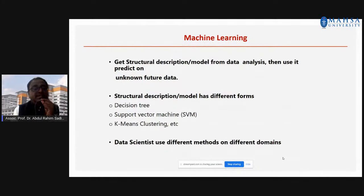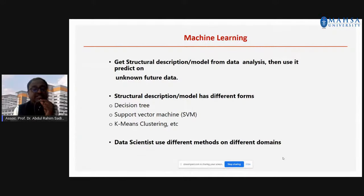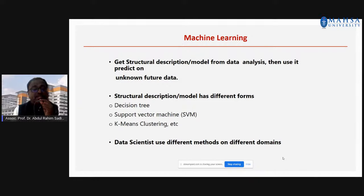The main algorithms include the decision tree, support vector machine, and K-means clustering. Basically, AI involves mathematics — especially algebra, vectors, and statistics — all involved in this machine learning algorithm. The algorithms have to be developed with the help of mathematical formulas.